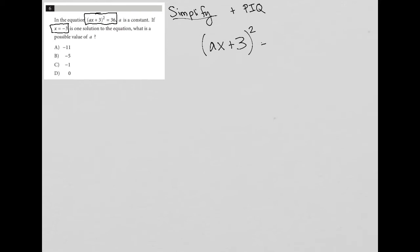I'm going to then simplify this by square rooting both sides. When I square root the left side, the square goes away, leaving me with just ax + 3. When I square root the right side, this is going to be ±6. Don't forget, it's not just positive 6, it's plus or minus 6.